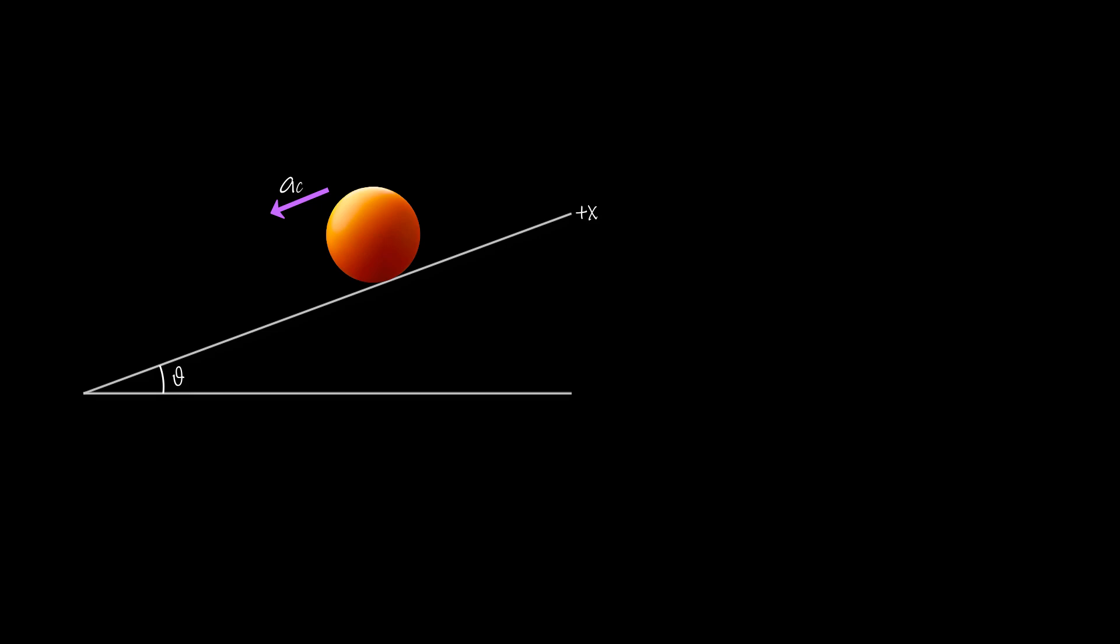The first thing we do is make a neat free body diagram and label all the forces acting on the body. We can see there are one, the force of gravity directed downwards and its component along the ramp is Fgx equals mg sine theta.